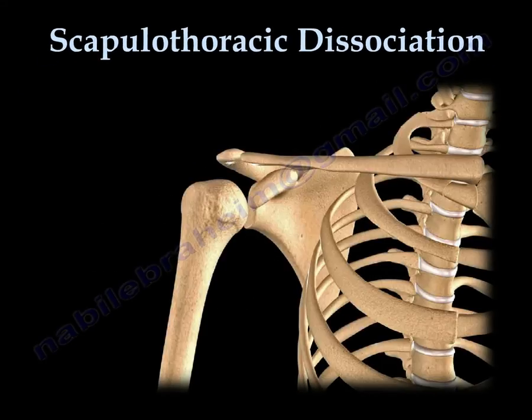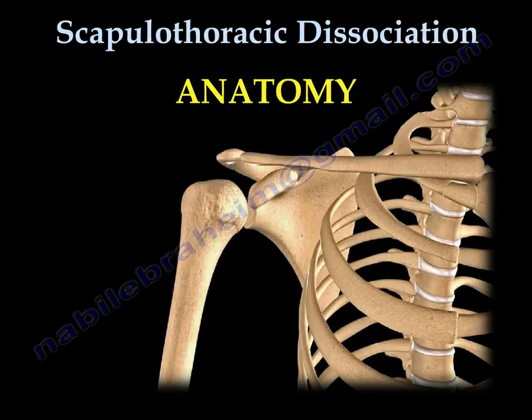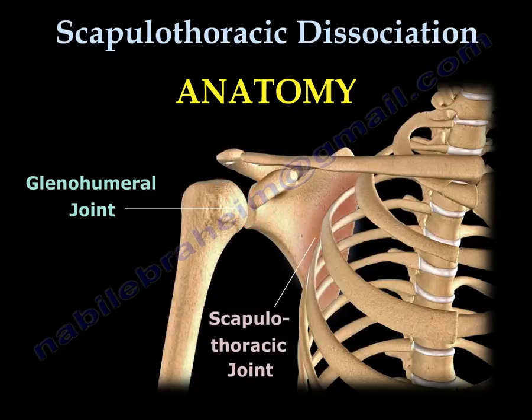Scapulothoracic Dissociation Anatomy. You can see the shoulder joint — we call it the glenohumeral joint — and the scapulothoracic joint. That's where the problem of the dissociation occurs.